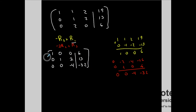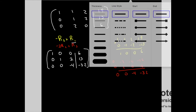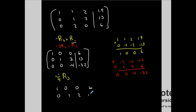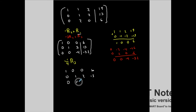I'm very close now. I need to make this a 1 in the third pivot position. All I have to do is take negative one-fourth and multiply it by row 3. Row 3 becomes 0, 0, 1, 8 — since negative 32 times negative one-fourth is 8. There are no fractions; this is a nice system.